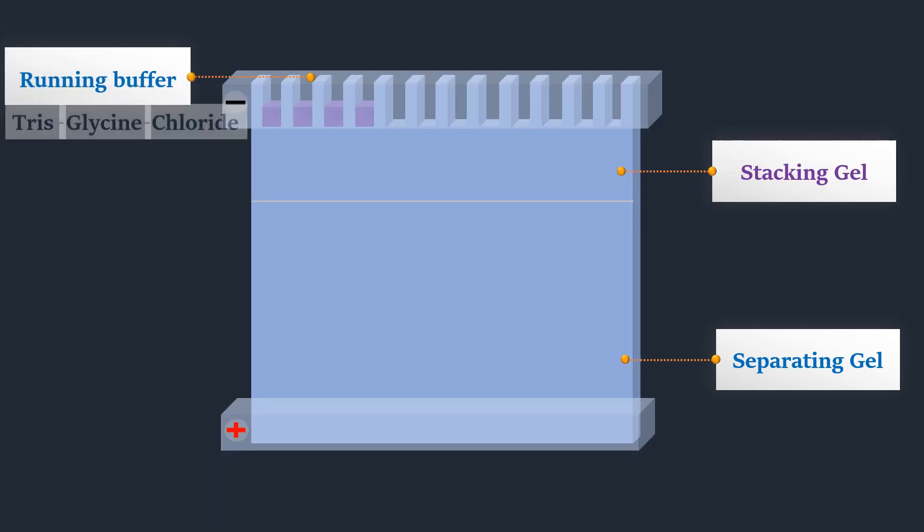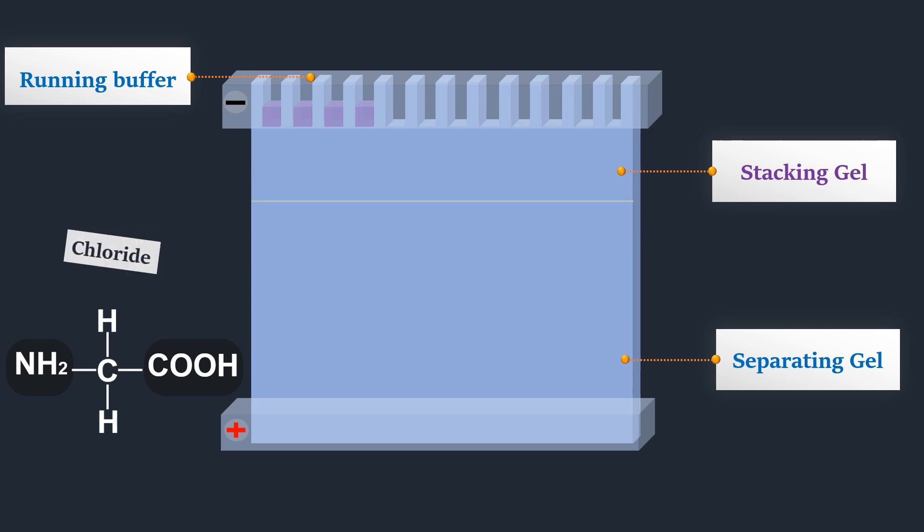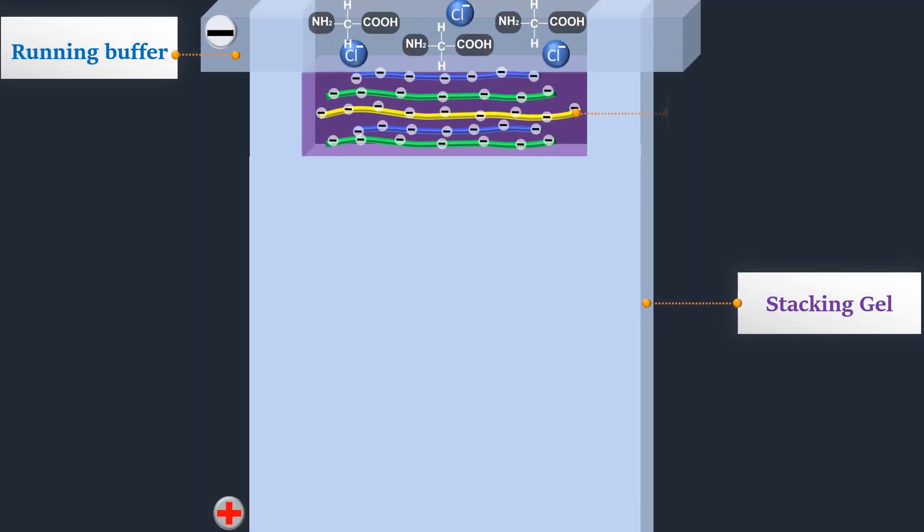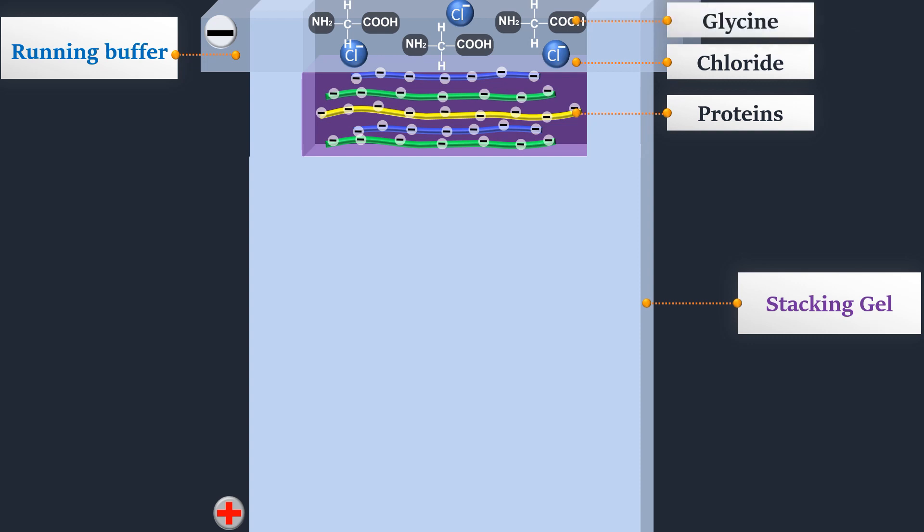As we have seen previously, the running buffer consists of glycine and chloride ions. In the sample wells we will have proteins, chloride ions, and glycine. Proteins and chloride ions are negatively charged, while glycine can exist in three different charge states depending on the pH.